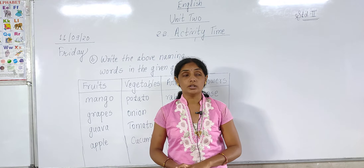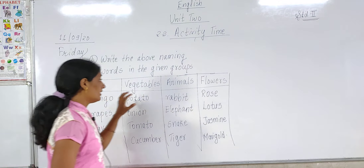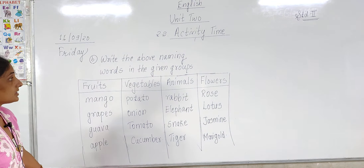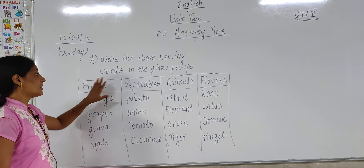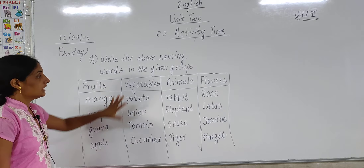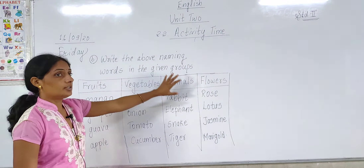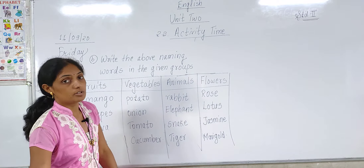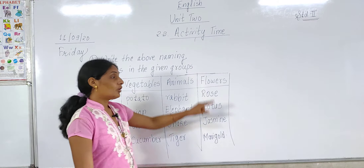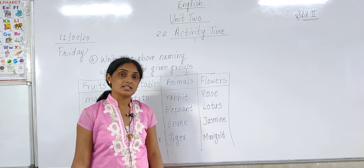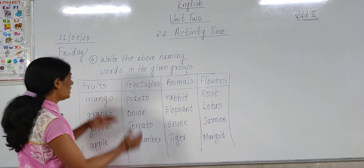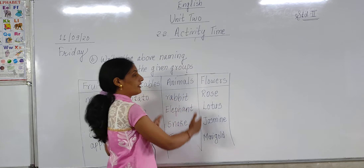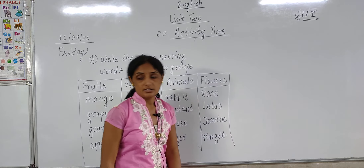In this way, the classifications are done according to naming words: names of fruits, names of vegetables, names of animals, and names of flowers.